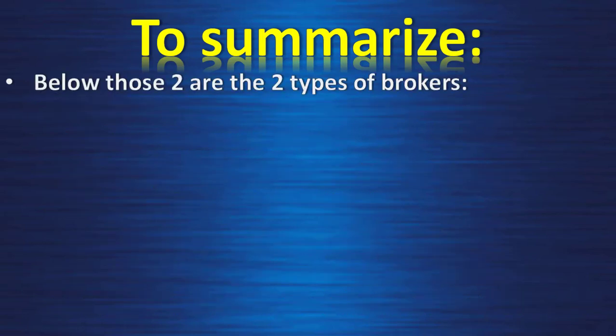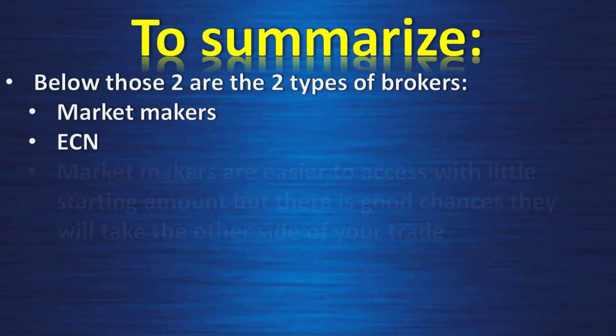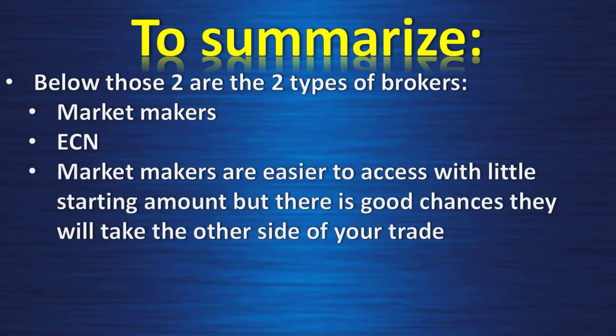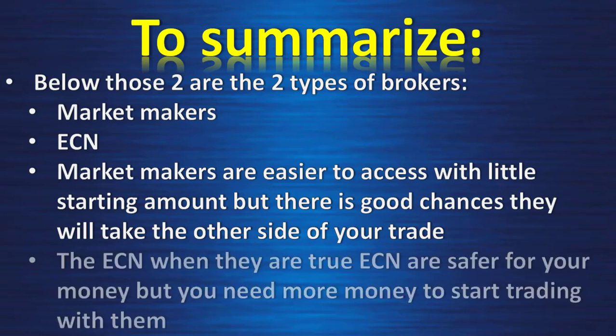Below those two are the two types of brokers: market makers and ECN brokers. Market makers are easier to access with a little starting amount, but there's a good chance they will take the other side of your trade. True ECN brokers are safer for your money, but you need more money to start — $100 to $200. Both types of broker offer a demonstration account where you can trade with fake money in real market conditions.